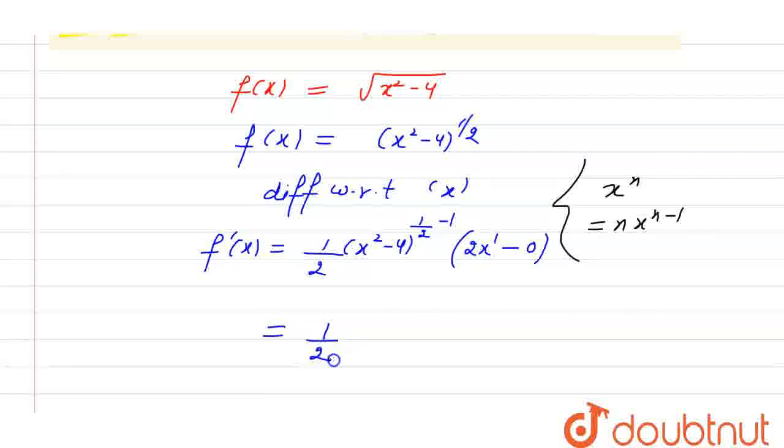1 divided by 2 into x square minus 4 raised to the power minus half into 2x. So, 2 will be cancelled by 2.